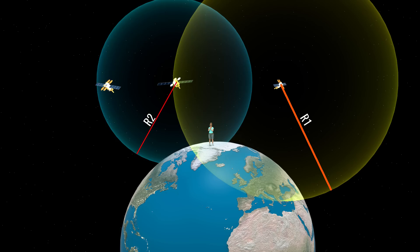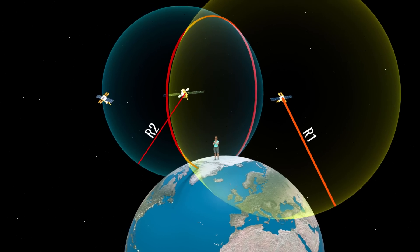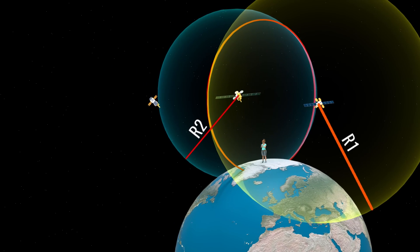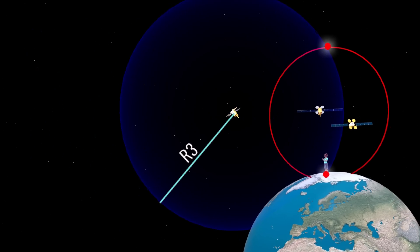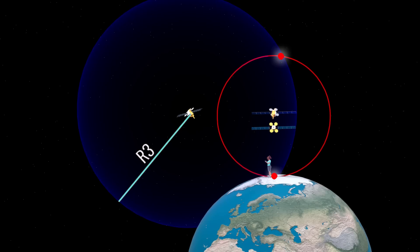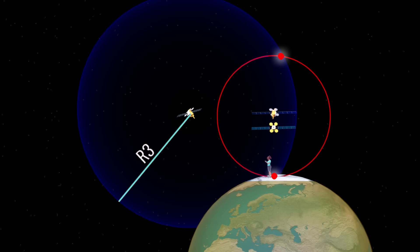With the use of a second satellite, your position narrows down to a circle. Note that the intersection of two spheres gives a circle. Now, with the help of a third satellite, you will be able to narrow down your location to just two points. Here, the intersection of a circle and a sphere gives two points. Just like in the previous case, using the Earth as the fourth surface, we find the correct point, the three spatial coordinates.